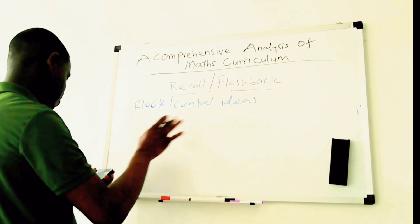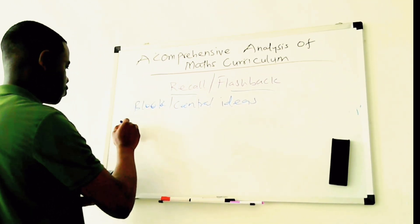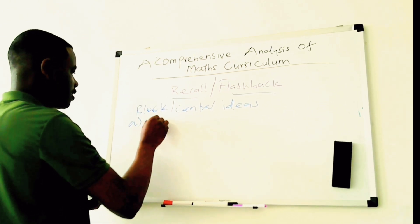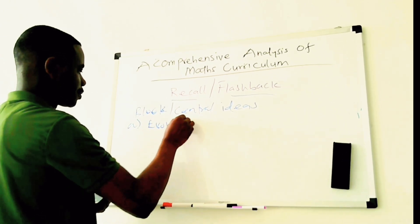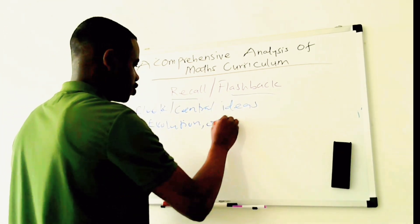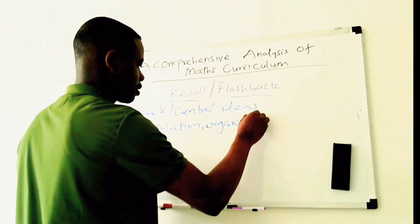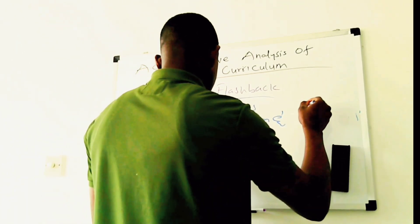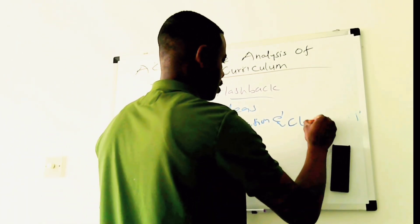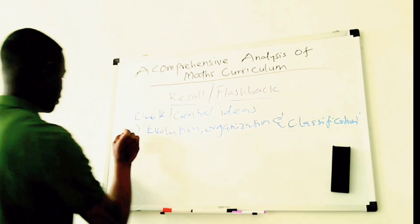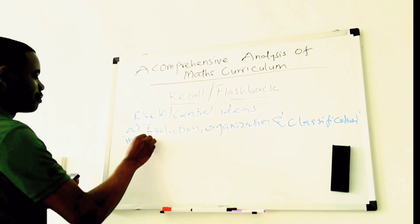Previously we said they were six, but we've now limited it to four. So the first one is evolution, organization, and classification in math.